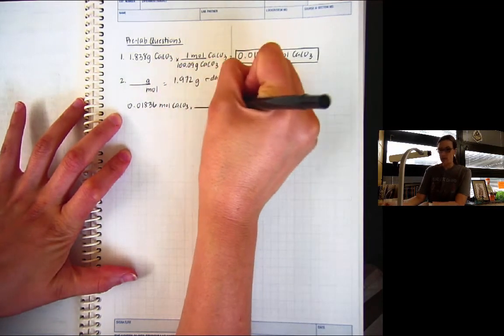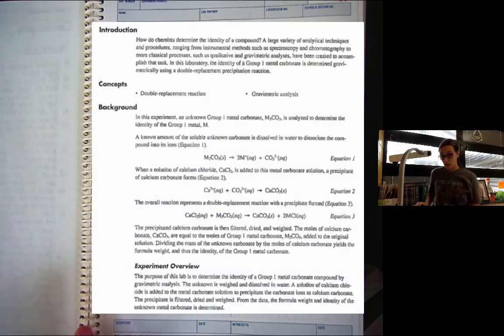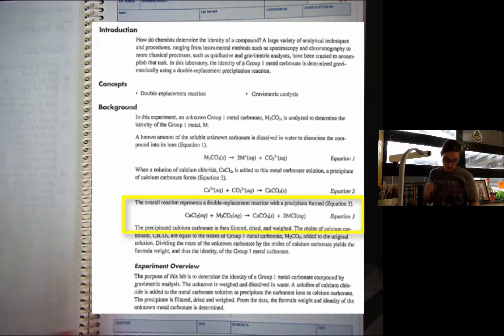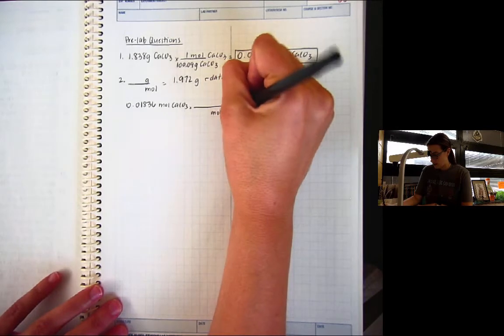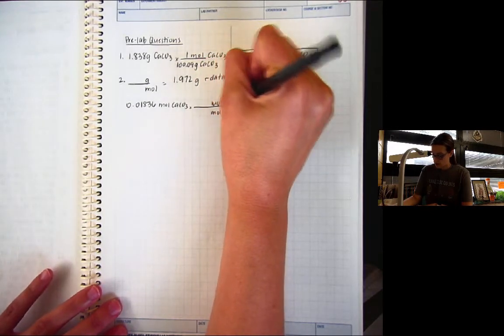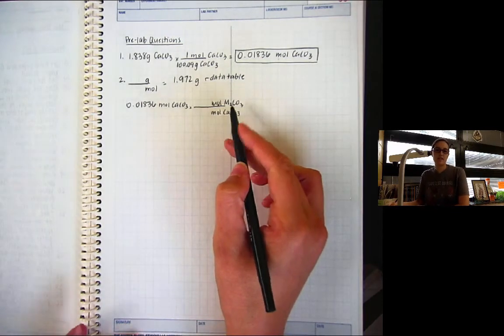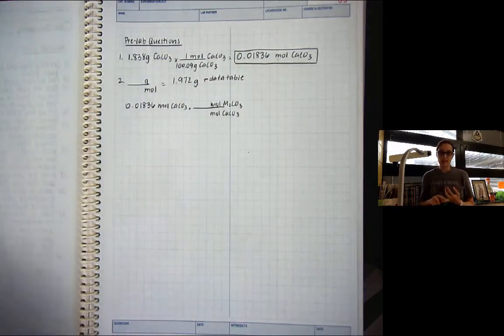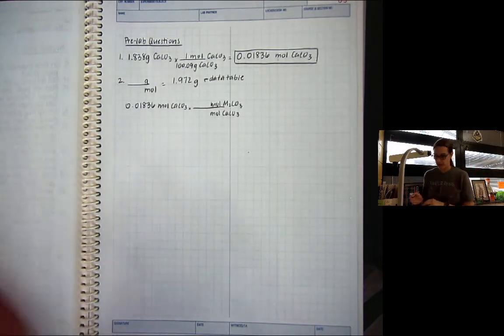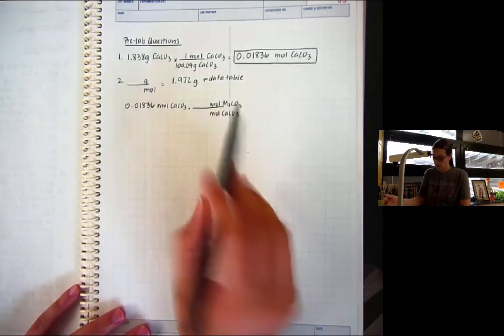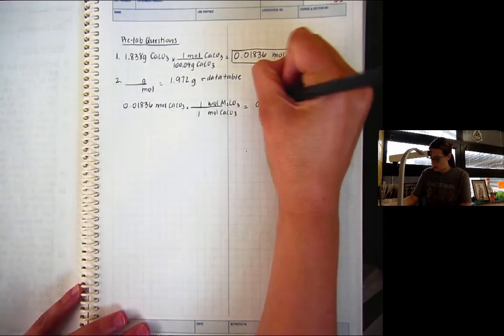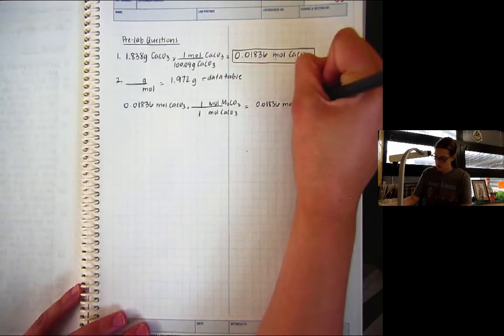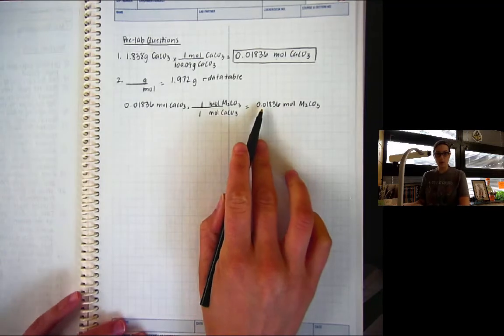If you read the background information, which I always say you should do, you will notice that there's a balanced equation in that background information. The balanced equation shows us the mole ratio of calcium carbonate to the unknown. I want to just say M2CO3, the reason that we can't find the molar mass of this, M represents a group 1 metal. So Li plus, Na plus, K plus, that's what M represents. M is not an element from the periodic table. M represents a group 1 metal. So from the balanced equation, it's a 1 to 1 ratio, which means 0.01836 moles of the metal carbonate.